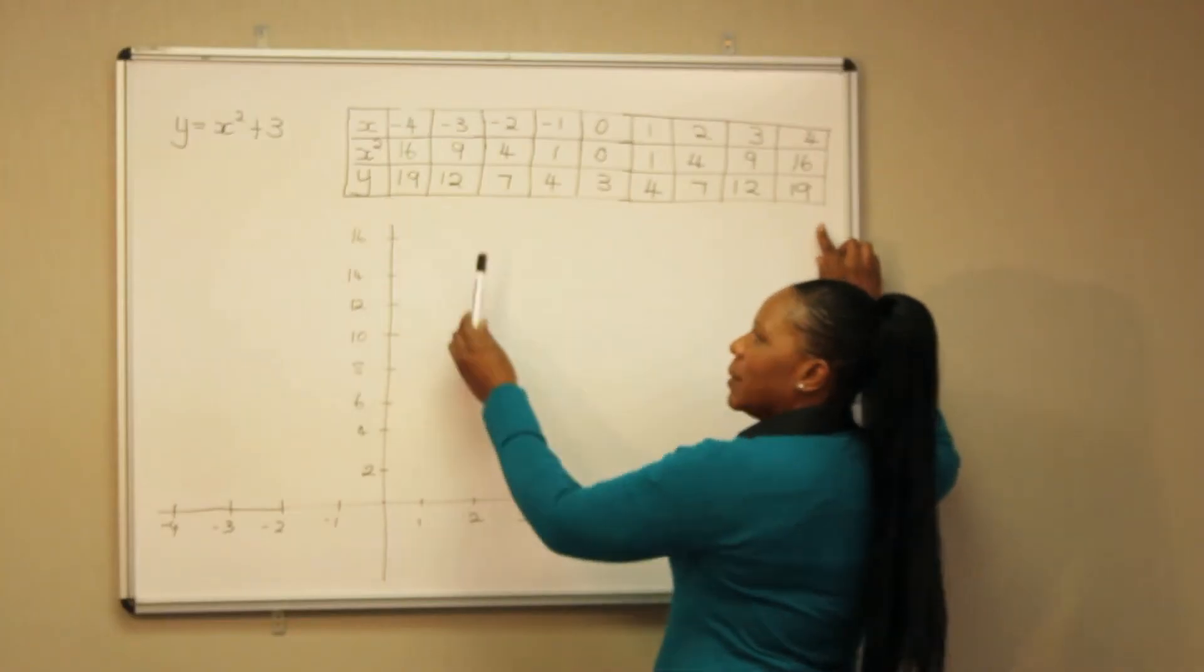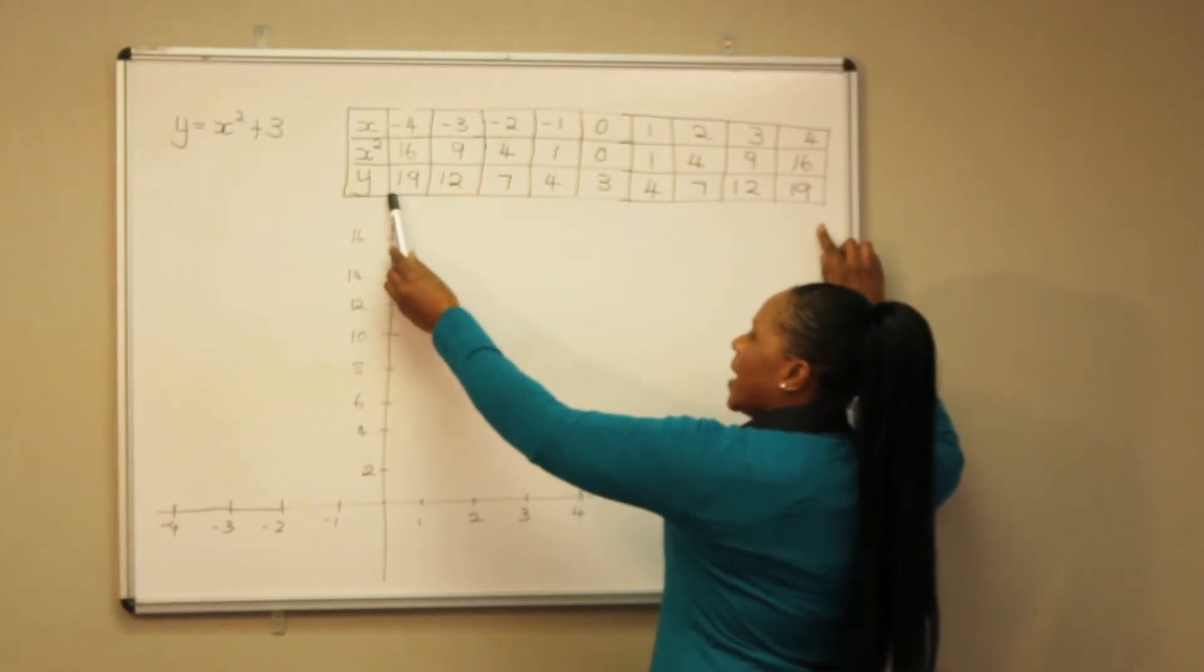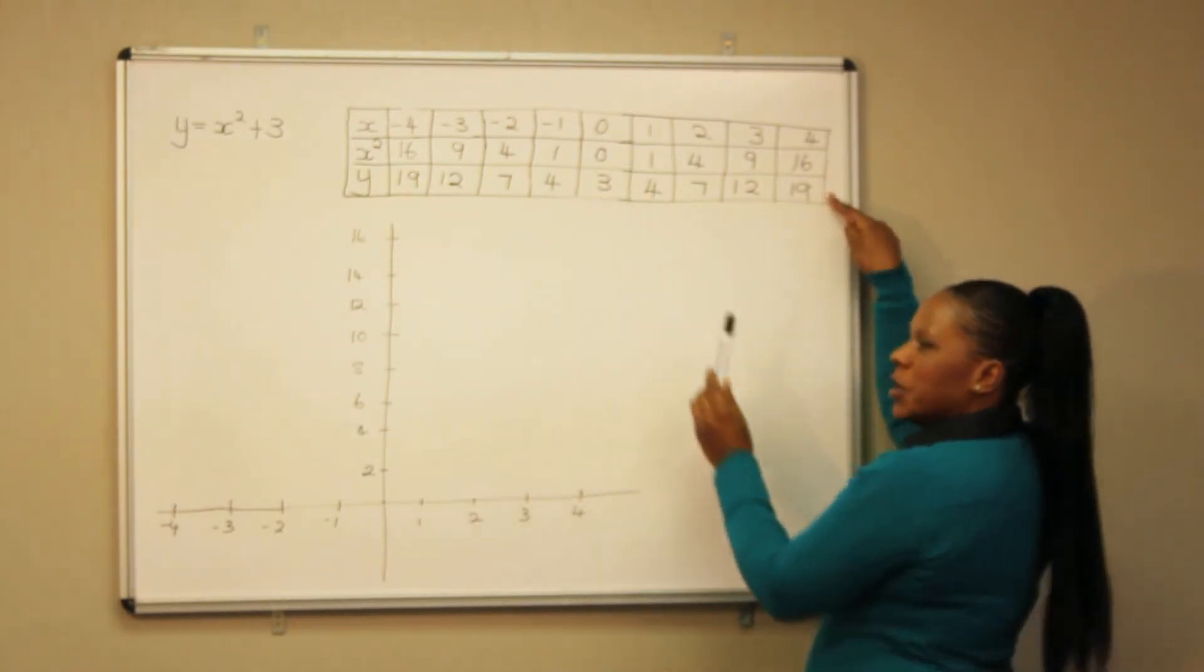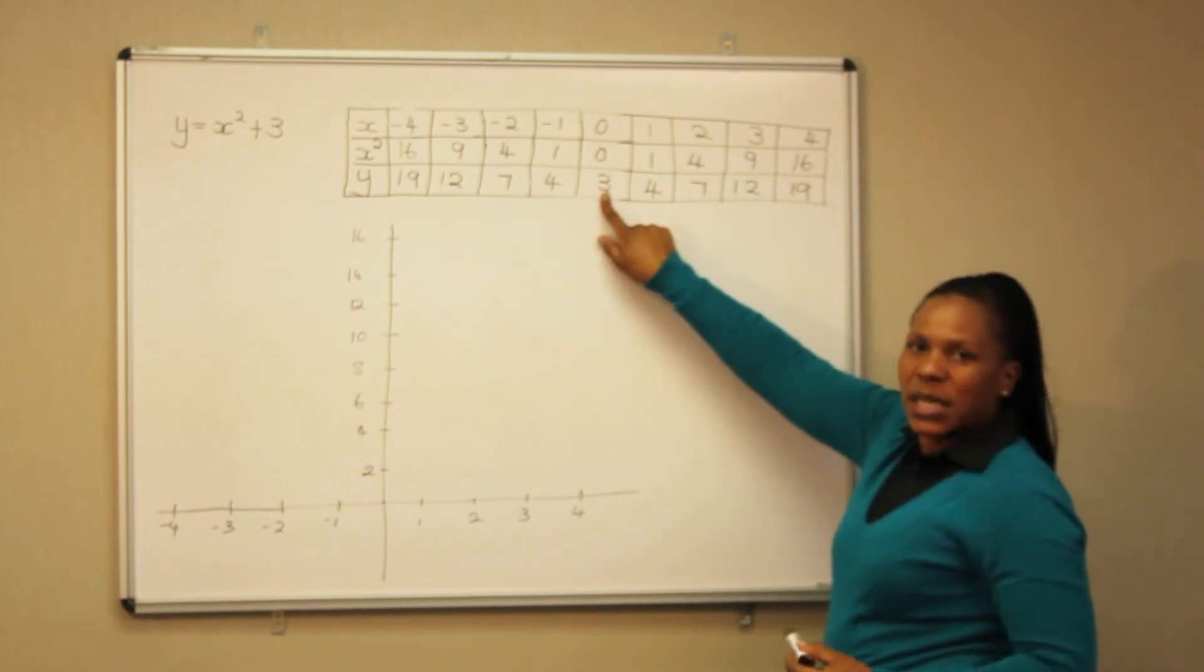When we look at the pattern of the numbers of the variables we see that from here they are decreasing up to 3. Then from 3 they are increasing again, which means 3 is our turning point.